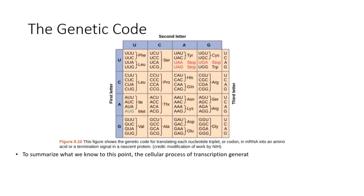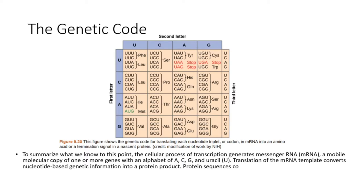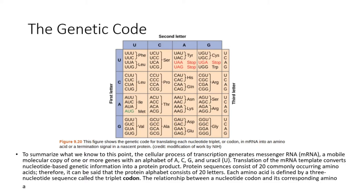To summarize what we know to this point: the cellular process of transcription generates messenger RNA (mRNA), a mobile molecular copy of one or more genes with an alphabet of A, C, G, and uracil (U). Translation of the mRNA template converts nucleotide-based genetic information into a protein product.